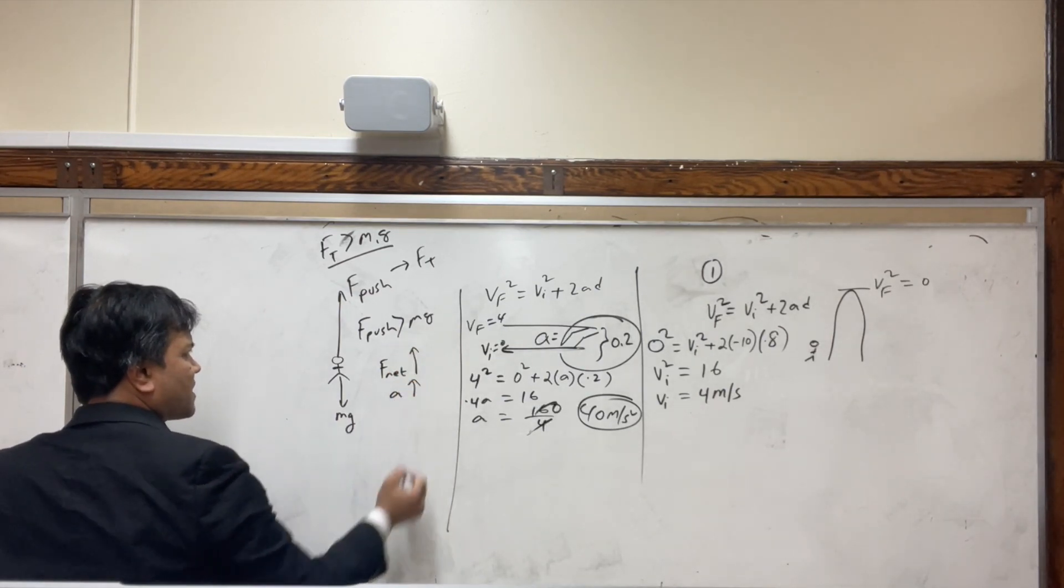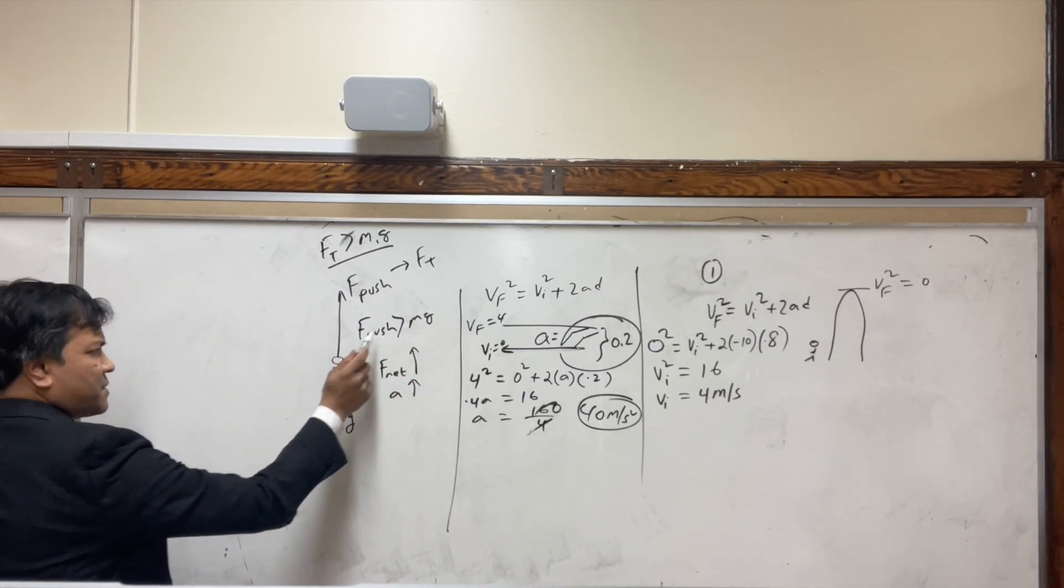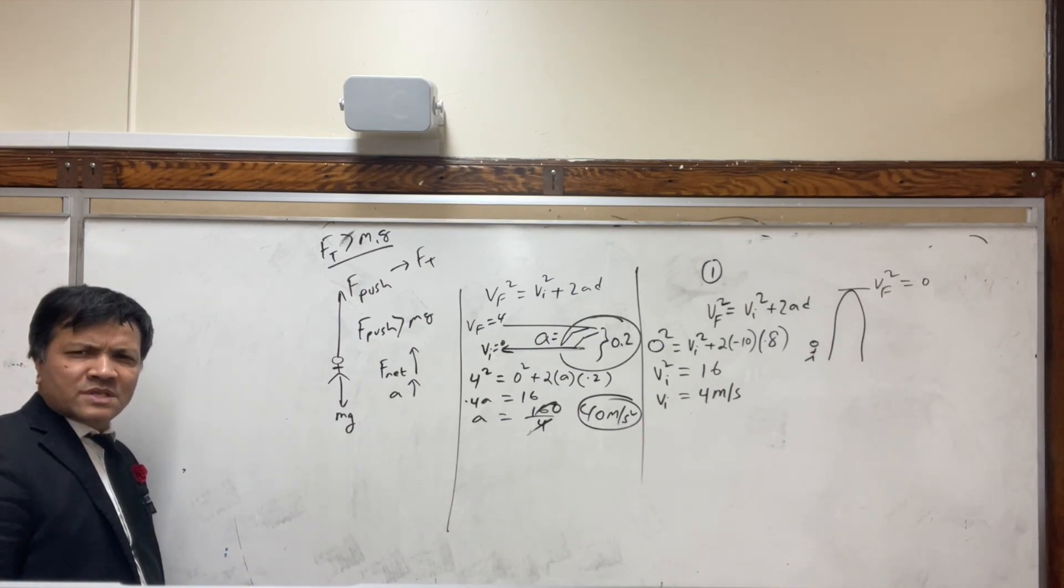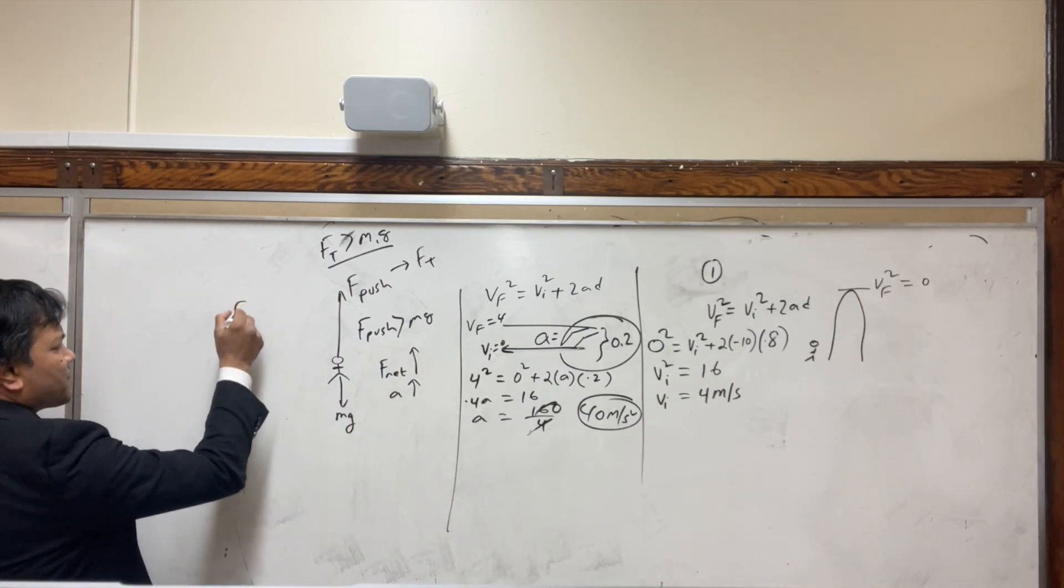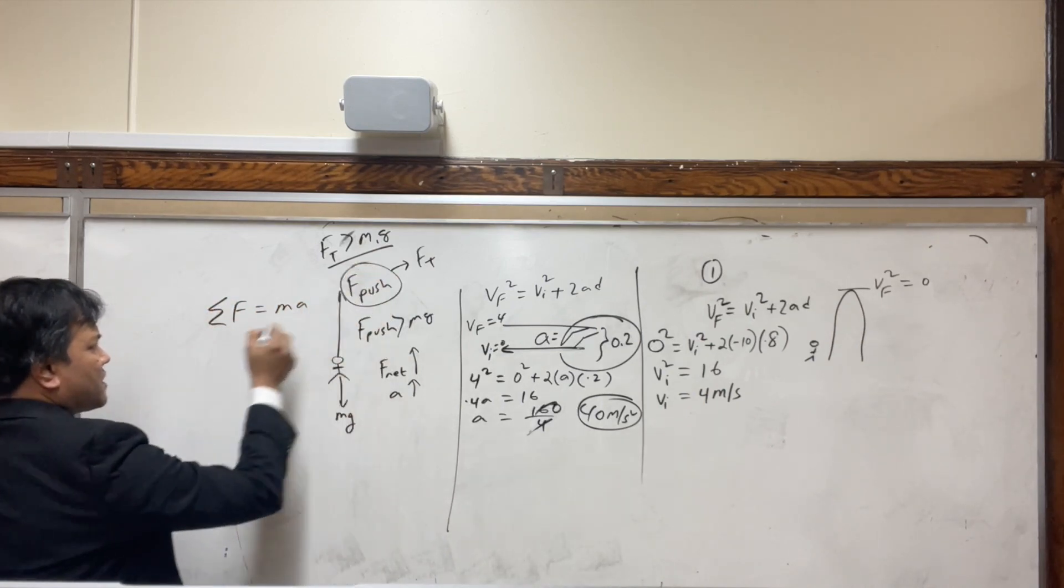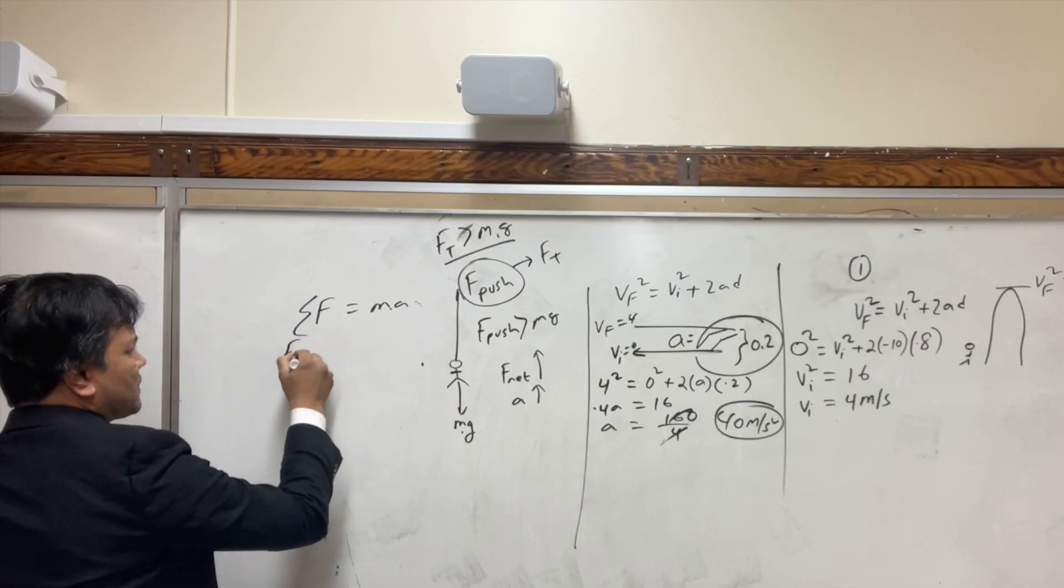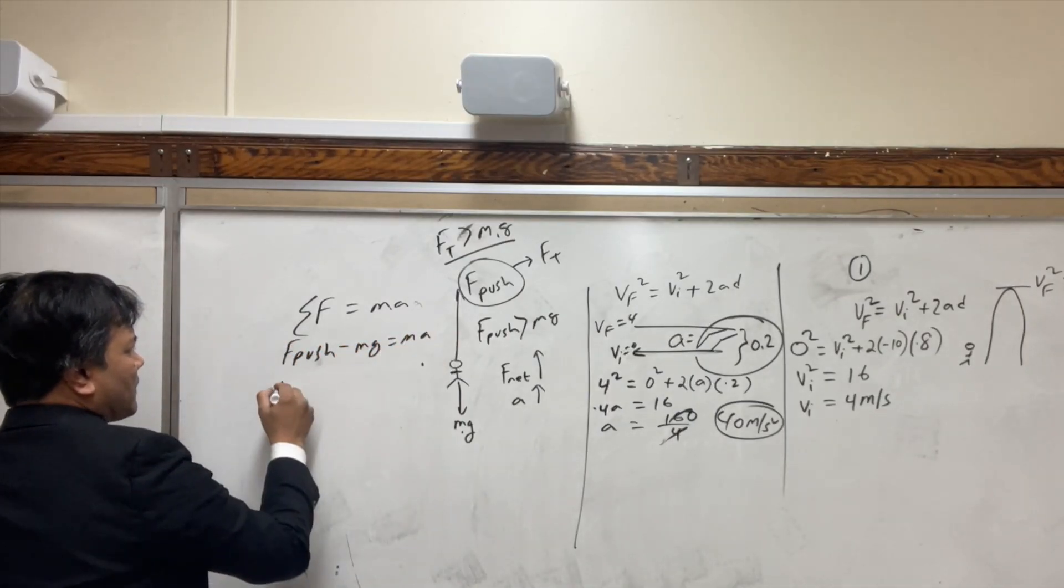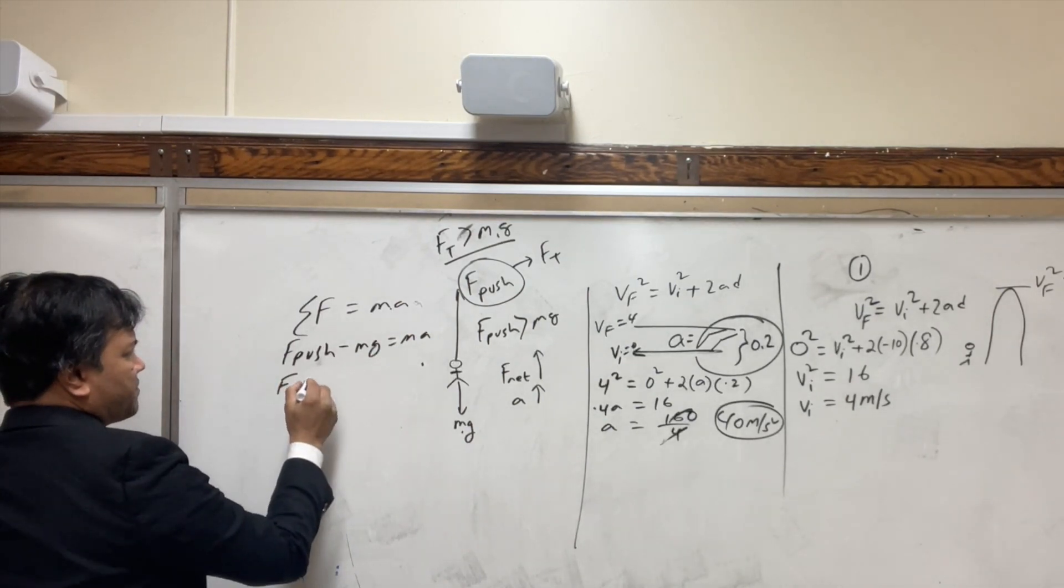Accelerating is upward direction, therefore F_push must be bigger than M_1g. Of course we do our calculation with Newton's second law: sigma F. You write all the forces: F_push minus mg is equal to ma. F_push is equal to mg plus ma.